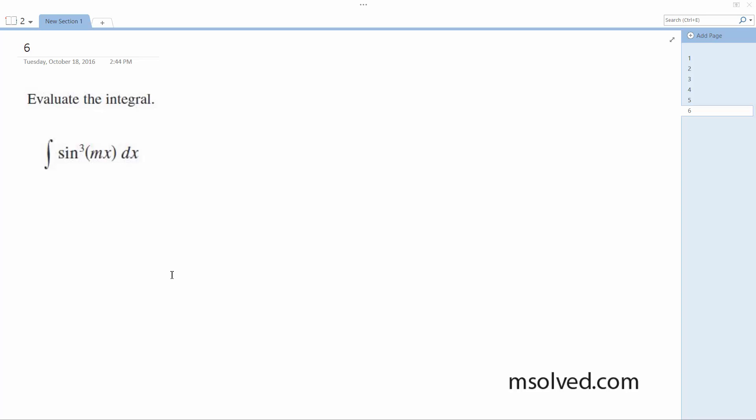Alright, we're going to evaluate the integral. I'm breaking this up, so we're going to break this down into 1 minus the cosine squared mx and sine mx dx, and this is just rewriting the sine squared.